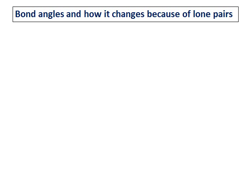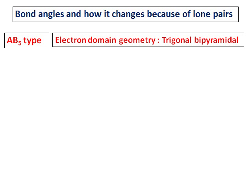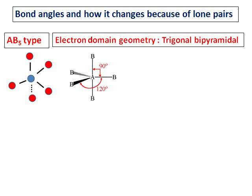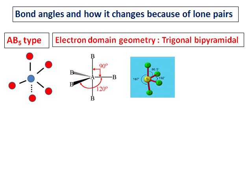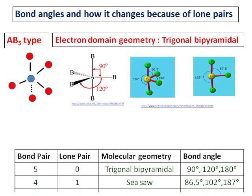After AB4, the next type is AB5, and the electron domain geometry of an AB5 type is trigonal bipyramidal. The shape is shown in the diagram, and the angles include 90 degrees, 120 degrees, and 180 degrees between the axial positions. Pictures with one lone pair and two lone pairs are also shown to give an idea of how the angle changes.